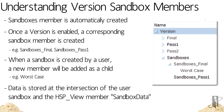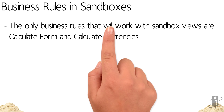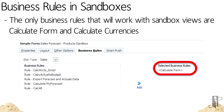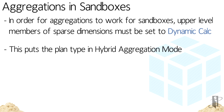The data in the Worst Case sandbox will be stored at the intersection of the Worst Case version member and the HSP View member Sandbox Data. Unfortunately, the only business rules available in sandboxes are the Calculate Form and Calculate Currencies rules. If your application does not have multiple currencies, you are stuck with just the Calculate Form rule. In order for aggregations to work for data in sandboxes, upper level members of sparse dimensions must be set to dynamic calc — basically putting the plan type in hybrid aggregation mode, combining the power of BSO and ASO databases in a single cube.